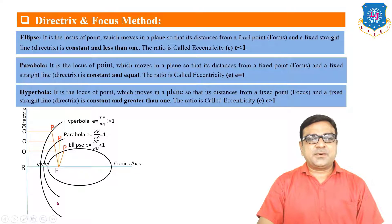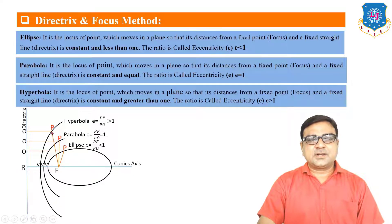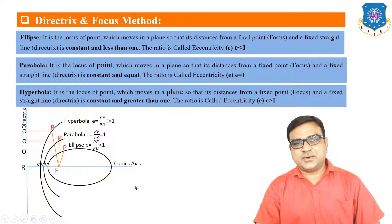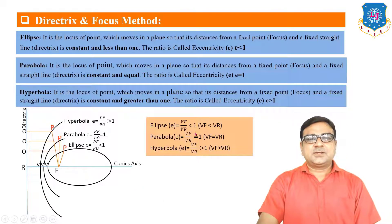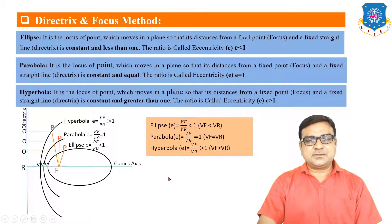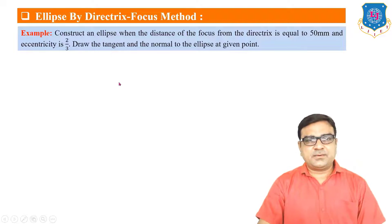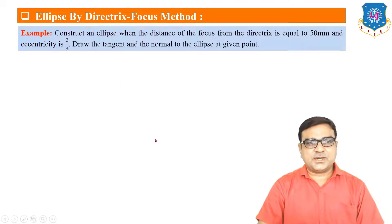For the hyperbola, VF divided by RV is always greater than one, meaning the focus-to-vertex distance is always greater than the vertex-to-directrix distance. Remember the eccentricity values for these three curves: less than one for ellipse, equal to one for parabola, and greater than one for hyperbola. Now let us draw one ellipse using the directrix and focus method.